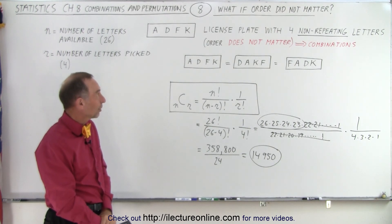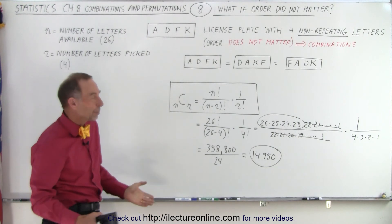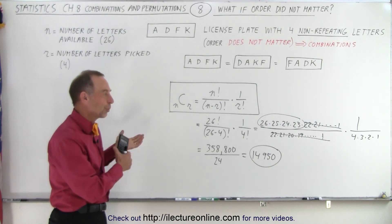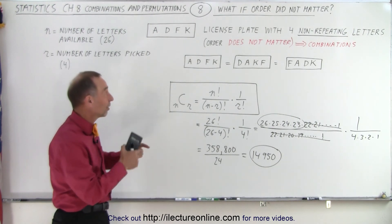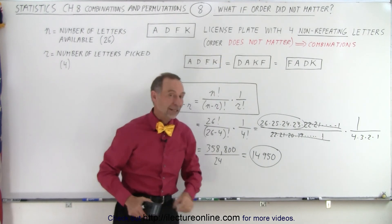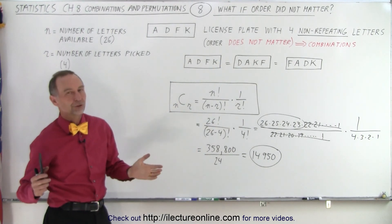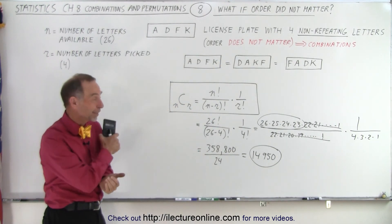So that's how you do it when the order does not matter. But that's of course a less useful example. But at least you can see the difference between combinations and permutations based on the fact that either order matters or order does not matter. And that is how it's done.